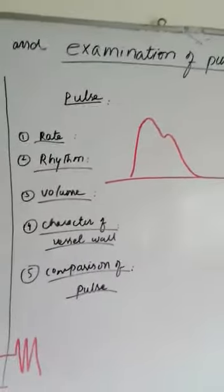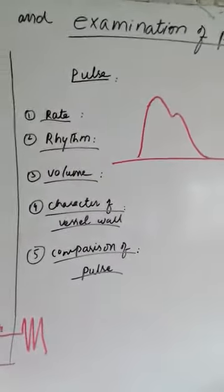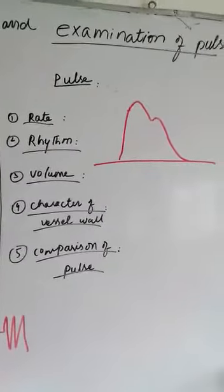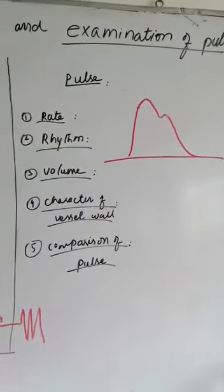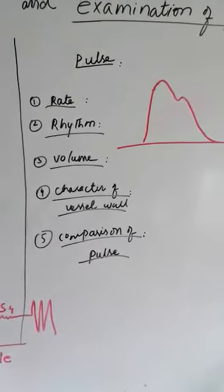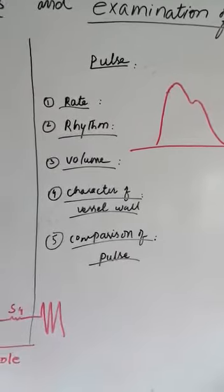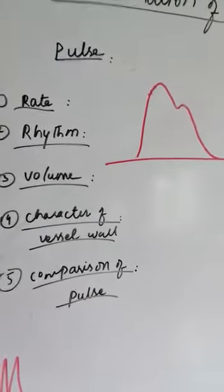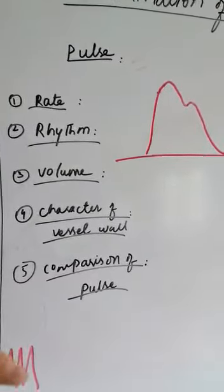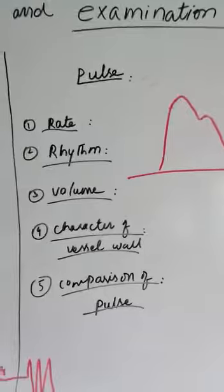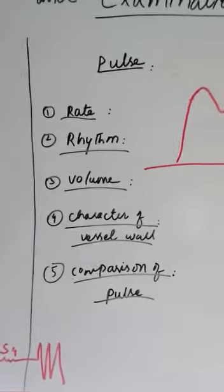Now we will focus on the practical aspect of examination of the pulse, because this is a short observed station — a very important practical where the command given is usually 'examine the radial pulse.' In the examination of the pulse, you follow a few prerequisites and check five characteristics: rate, rhythm, volume, character of the vessel wall, and comparison of the pulse.